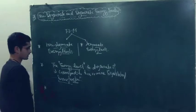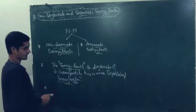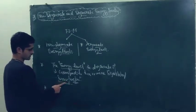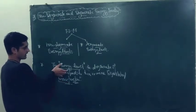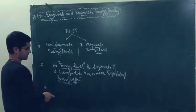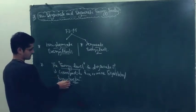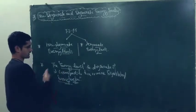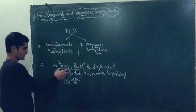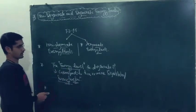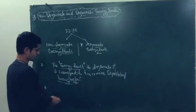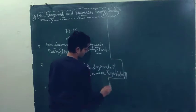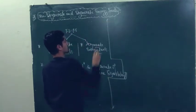One word about degeneracy: the number of different wave functions which give the same energy in a quantum system is called the degeneracy, or degree of degeneracy, of the energy level. It may be one, two, three, four, or any integer number. Let me give you an example to show what degeneracy means.